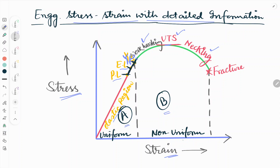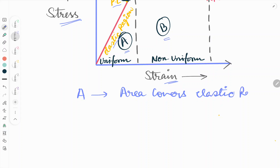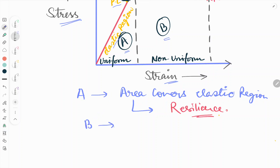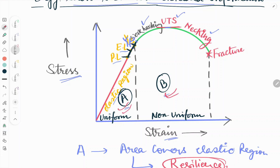The curve is divided into two parts, A and B. Area A covers the elastic region, which is basically important for resilience of any metal. Area B is basically for toughness of the material.